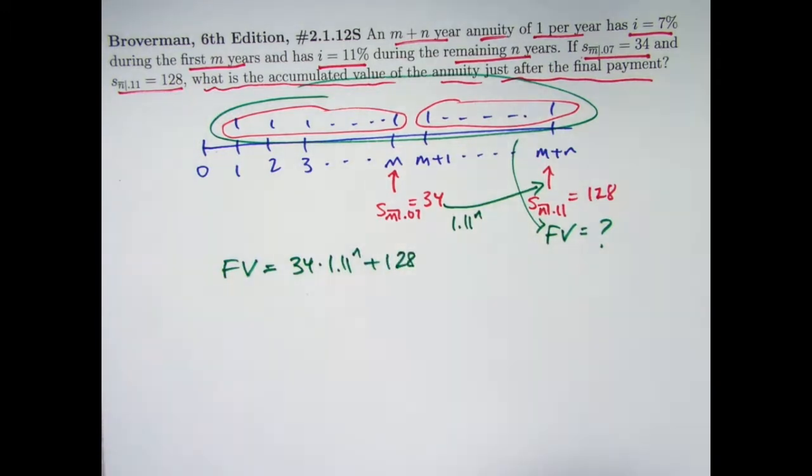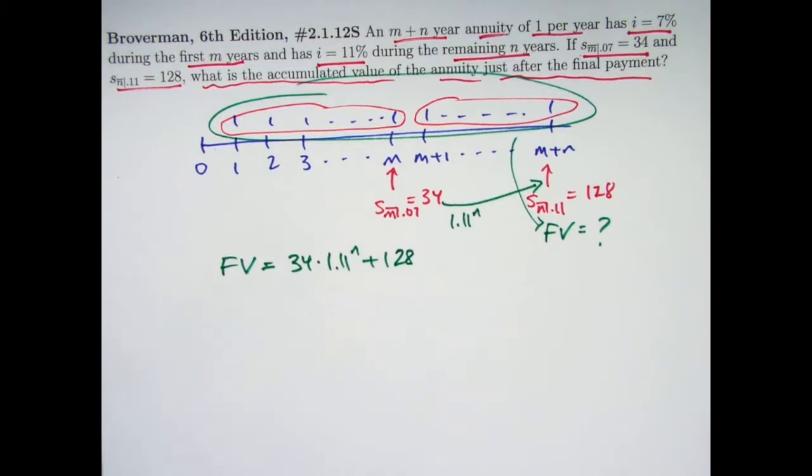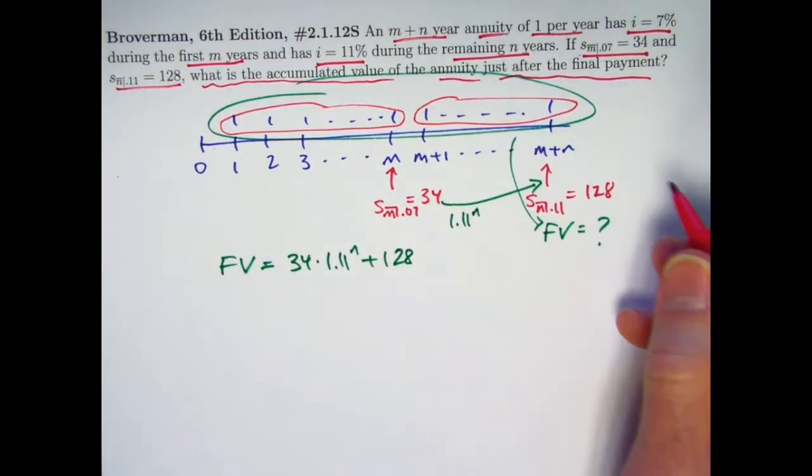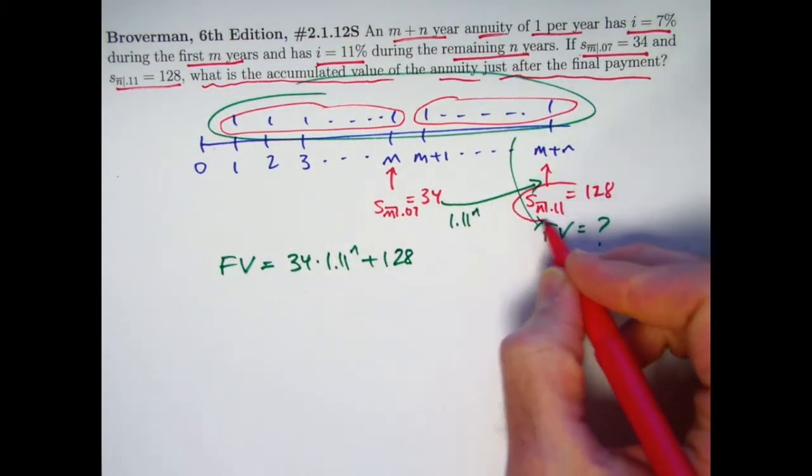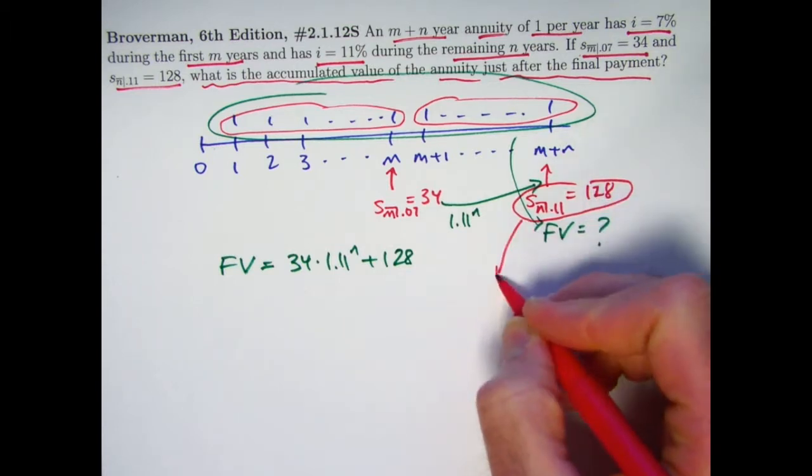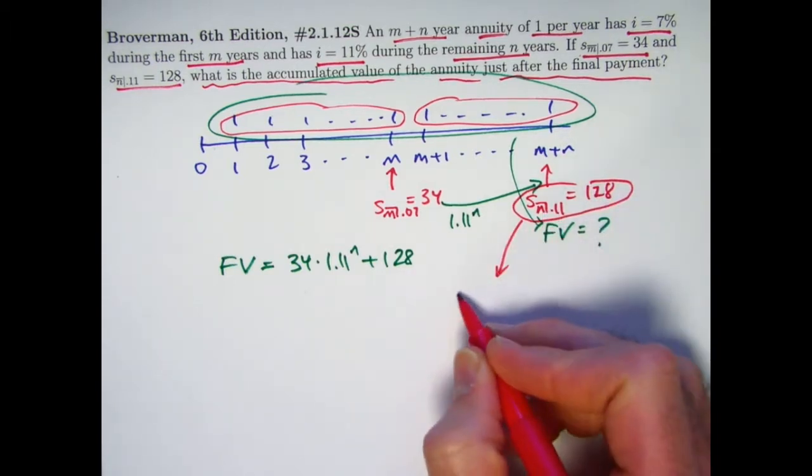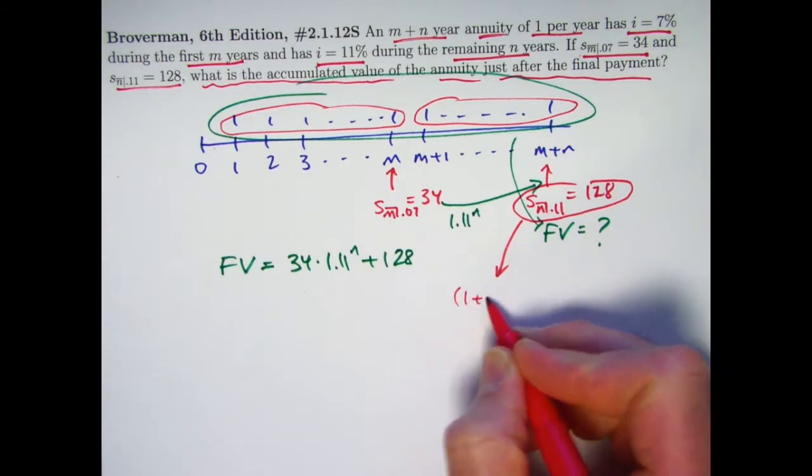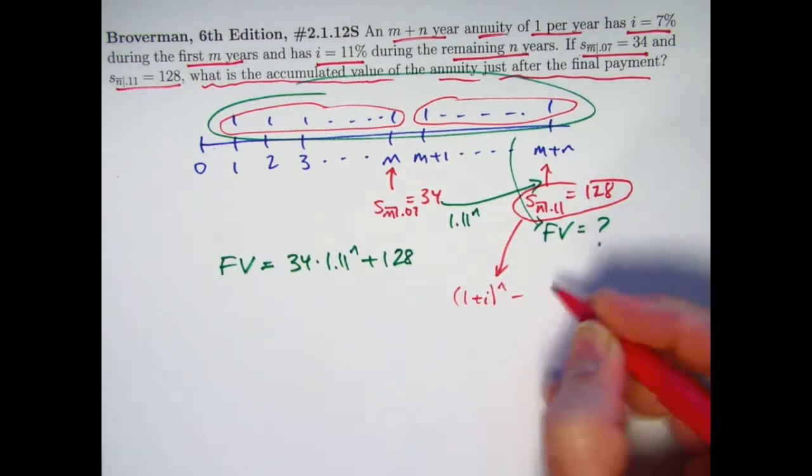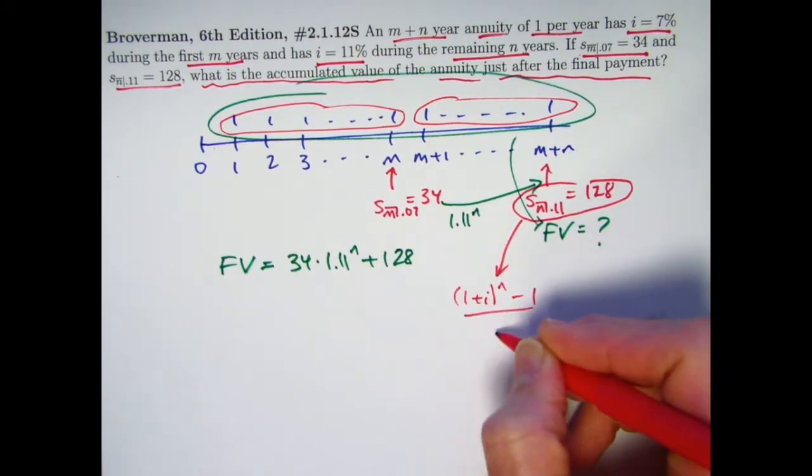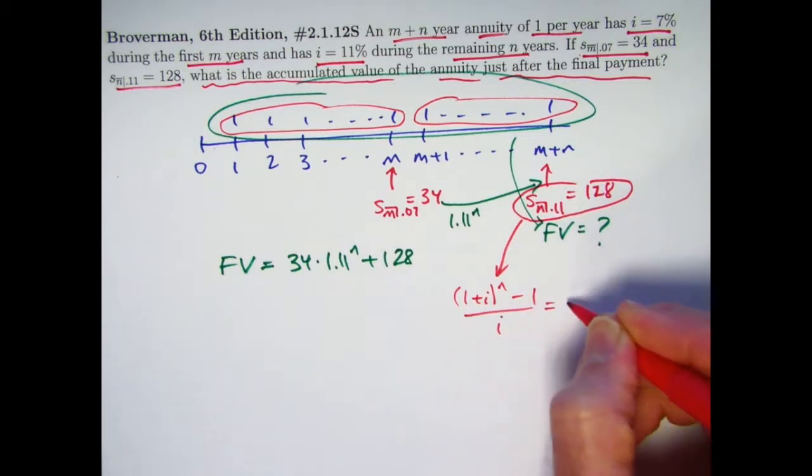So we'll be done if we can figure out what 1.11 to the N power is. How would we do that? Well, probably it would be easiest to use this given piece of information because if you think about it, think about the formula for S_N, it's going to involve 1 plus i to the N. Does it matter what N is? Not really.